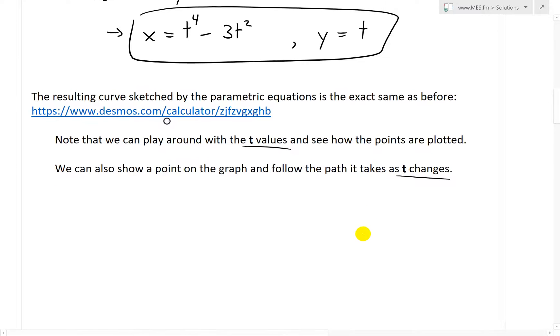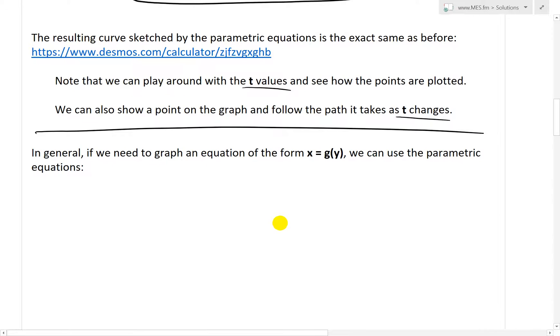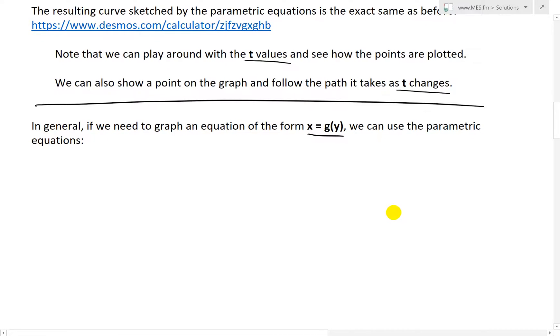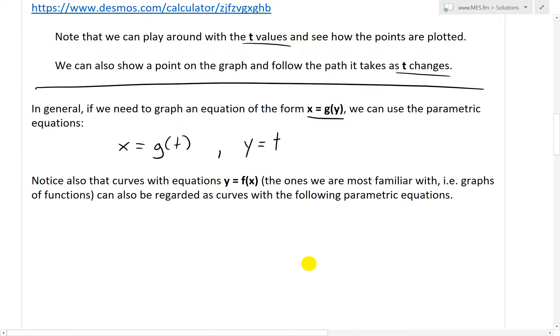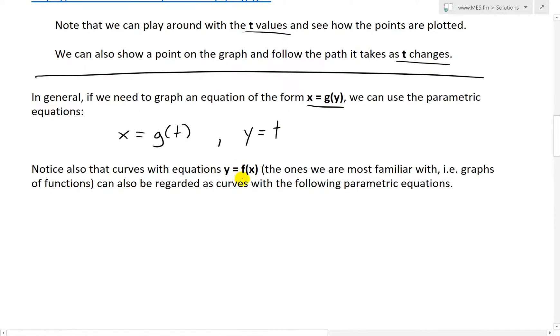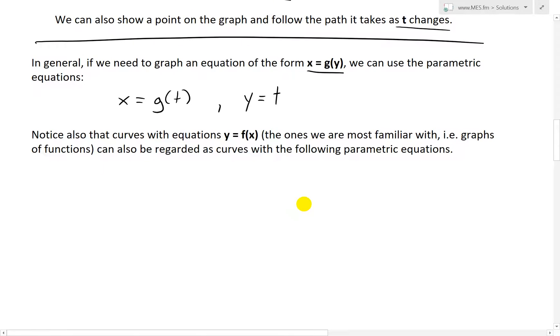In general, if we need to graph an equation of the form x equals g of y, we can use parametric equations. We'll write x equals g of t and y simply equals t. We just set y equal to t and can graph it along like that. Also notice that curves of the equation y equals f of x, the ones we are most familiar with, can also be regarded as curves of the following parametric equations: x equals t and y equals f of t.